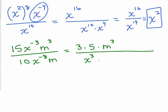I'm going to factor the 10, so this is times 2 times 5. The x to the negative 8, I'm going to put that in the numerator with a positive exponent, and the m is down here. And now I'm going to see if I can cancel anything, if I can use the quotient rule in any way.